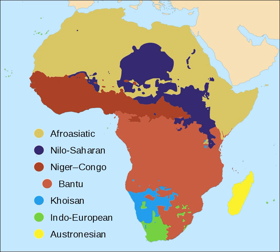Throughout the long multilingual history of the African continent, African languages have been subject to phenomena like language contact, language expansion, language shift and language death. A case in point is the Bantu expansion, in which Bantu-speaking peoples expanded over most of sub-equatorial Africa, displacing Khoisan-speaking peoples from much of Southeast Africa and Southern Africa, and other peoples from Central Africa. Another example is the Arab expansion in the 7th century, which led to the extension of Arabic from its homeland in Asia into much of North Africa and the Horn of Africa. Trade languages are another age-old phenomenon in the African linguistic landscape, with cultural and linguistic innovations spreading along trade routes.